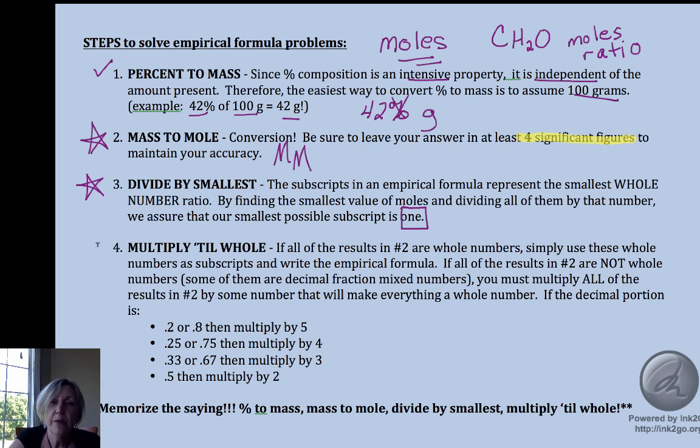It's possible that at that step you do not end up with a whole number, and we have to have a whole number ratio of moles. You may end up with something like 1.5 or 4.25. We have to get that to a whole number. If you have 1.2 or 2.8, you would multiply everything by 5.